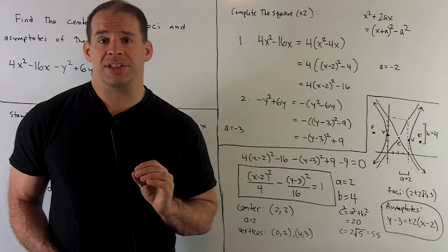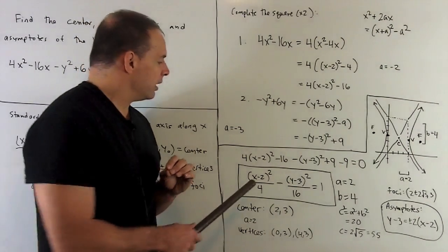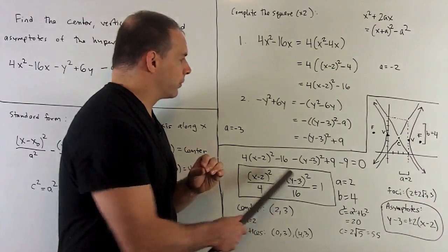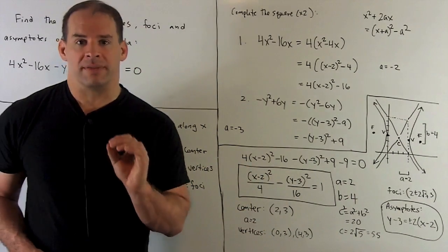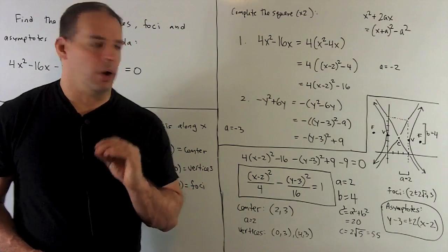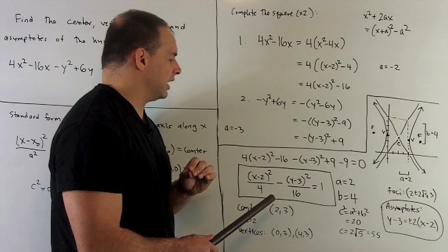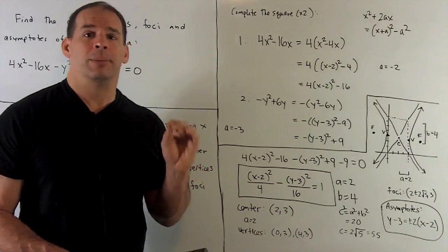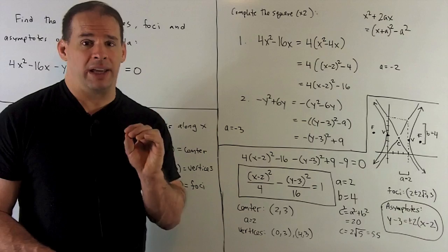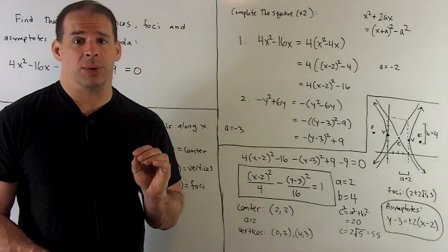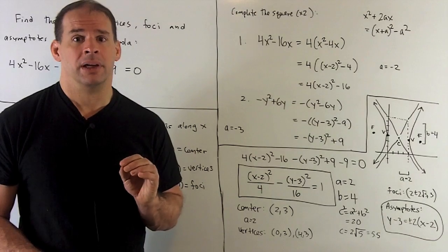Now that we have the equation in standard form, we can go through our list of items. First, the center is going to be at (2, 3). So that's the point right there. Once I have the center, I can get the vertices. I have a² = 4, b² = 16. So a = 2, b = 4. We can get c². That's going to be 20, which is a² + b². So c = √20, or 2√5.